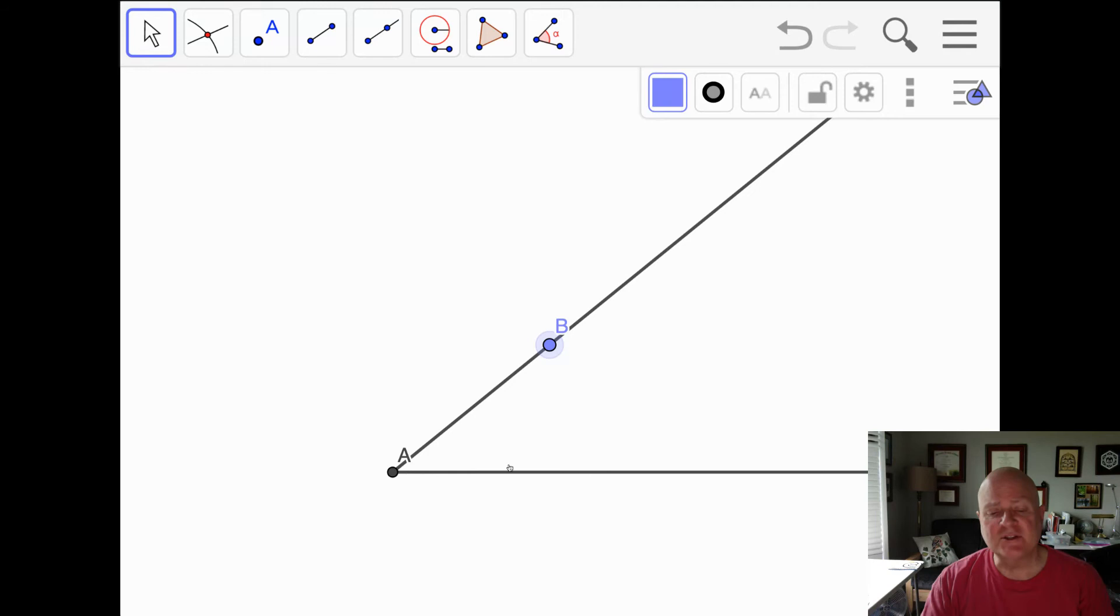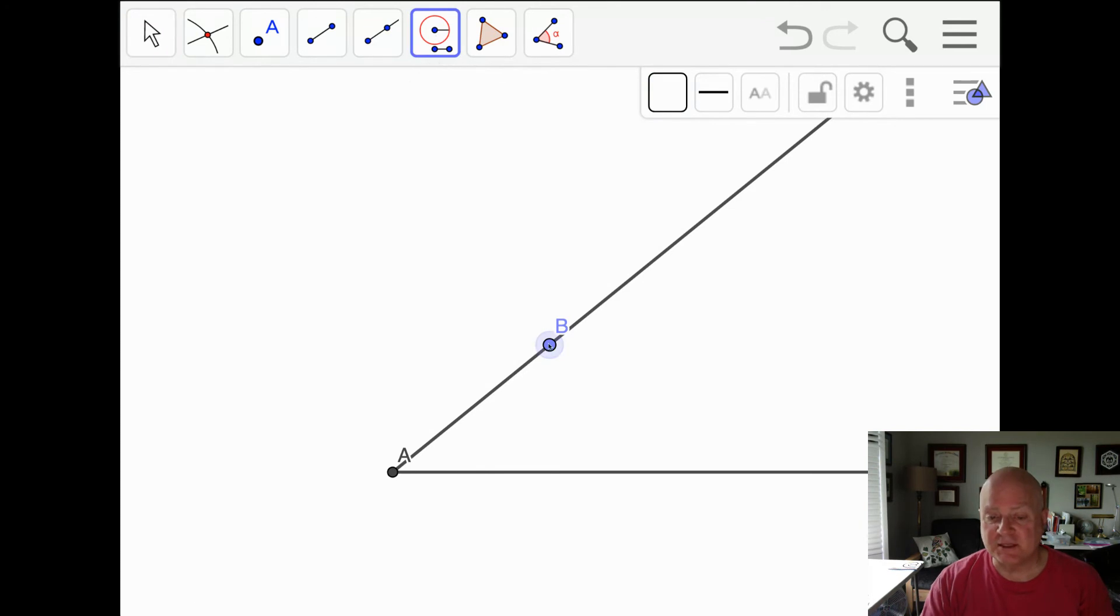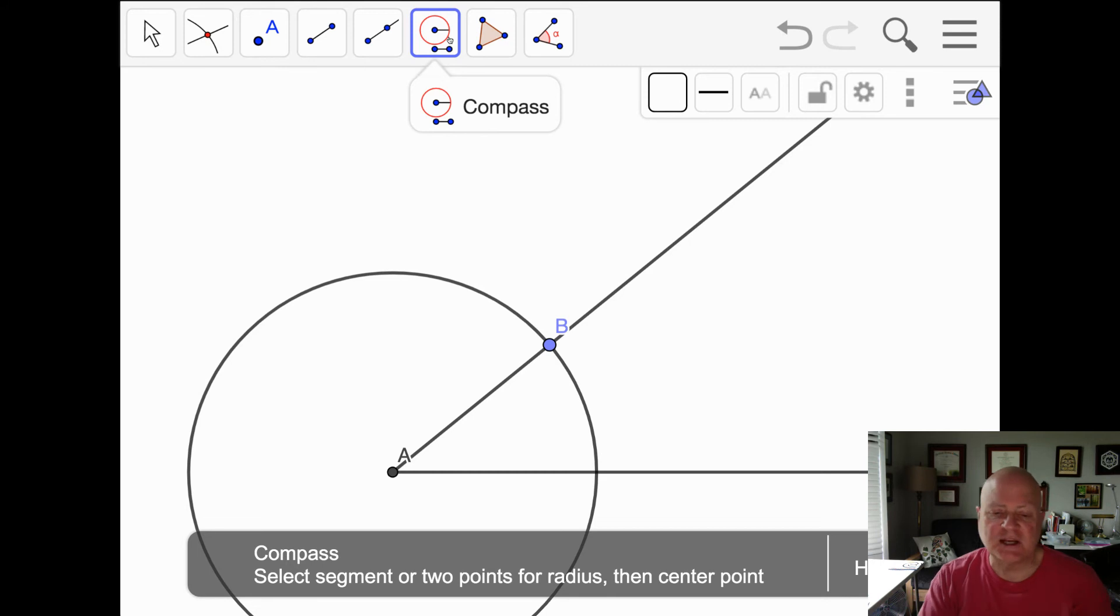I need a point on this other side of angle A that is the same distance from A as B is from A. So I'm going to use my compass tool to measure that distance. It's this far, which is the radius, and I'll put the center at A. Notice when you do the compass tool, it says to select two points for the radius and then the center point.